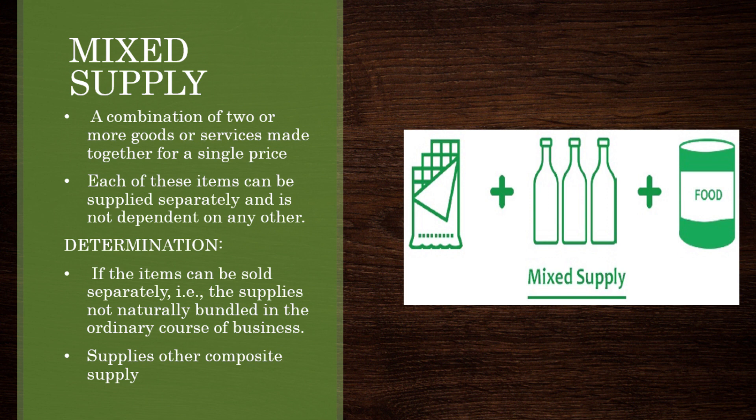If you look at a Diwali gift pack, there are chocolates, biscuits, and nuts inside. So is a gift pack a Composite Supply or Mixed Supply? Composite Supply means it's naturally bundled — that's why Composite Supply is applied. But what about chocolates and biscuits together in a pack? It's all put together in one packing.